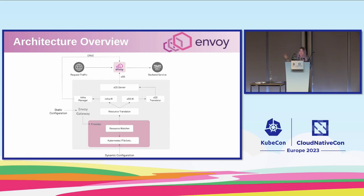Once we've converted all resources into XDS IR, the XDS translator subscribes to that. As new updates are pushed from watching configuration, the XDS translator will process all of that IR into new XDS resources. After that, we have the XDS server, which subscribes to updates from the XDS translator and pushes those updates out to the fleet of Envoy proxies. On the infra side, we have support for automatically creating Envoy proxy instances. When you create a gateway resource, that triggers us to create a new instance of Envoy proxy. So you can have multiple different gateways managed by a single instance of Envoy Gateway, each with totally different configurations.